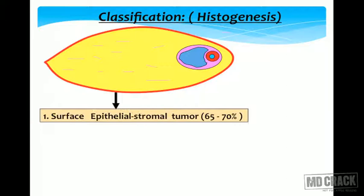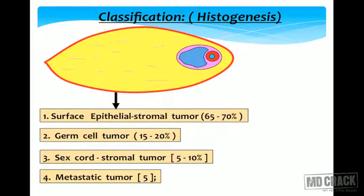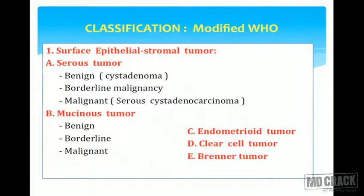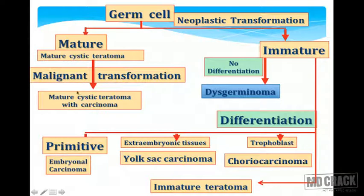Surface epithelial stromal tumors account for about 70% of ovarian tumors, followed by germ cell tumors, then sex cord stromal tumors. Serous and mucinous tumors are classified as benign, borderline, and malignant. Benign are called cystadenomas; malignant are cystadenocarcinomas. Mucinous cystadenocarcinoma is known for pseudomyxoma peritonei. Among germ cell tumors, mature cystic teratomas are most common; rarely they undergo malignant transformation — about 1-2% develop squamous cell carcinoma.